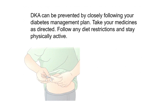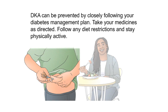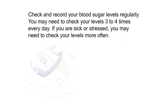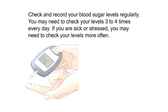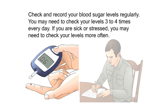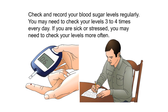Prevention. DKA can be prevented by closely following your diabetes management plan. Take your medicines as directed, follow any diet restrictions, and stay physically active. Check and record your blood sugar levels regularly — you may need to check your levels three to four times every day. If you are sick or stressed, you may need to check your levels more often.